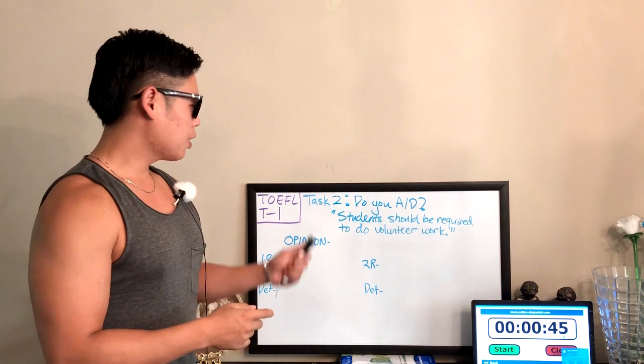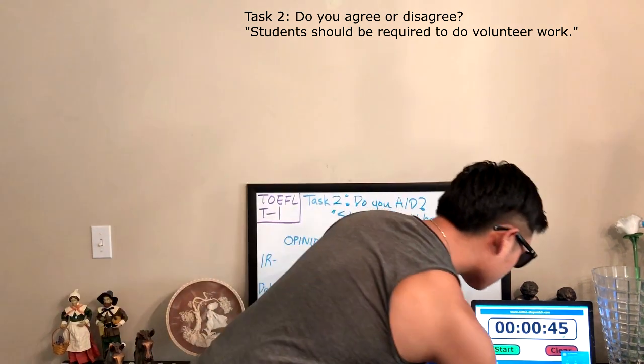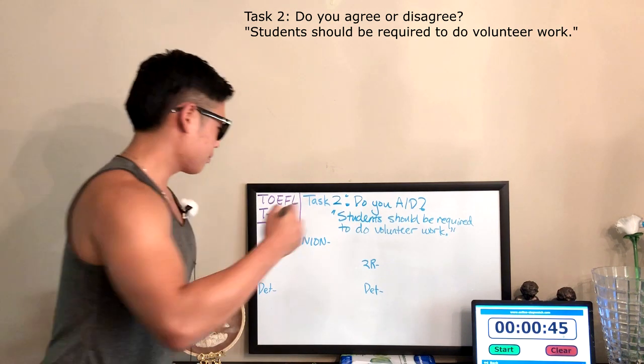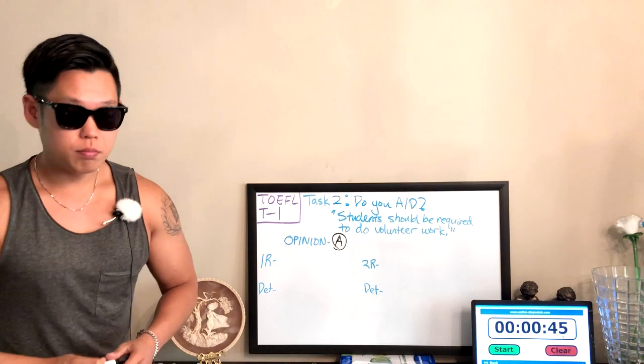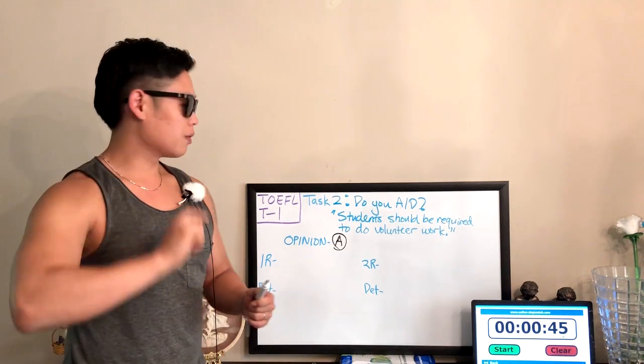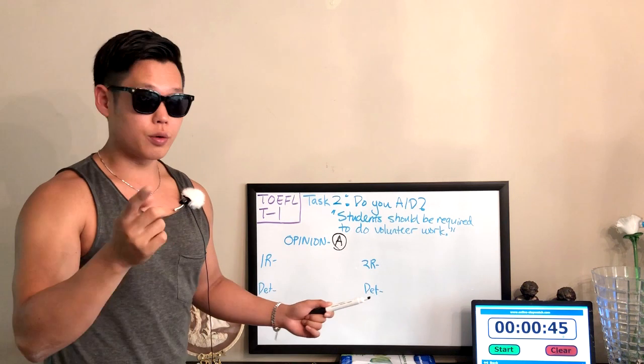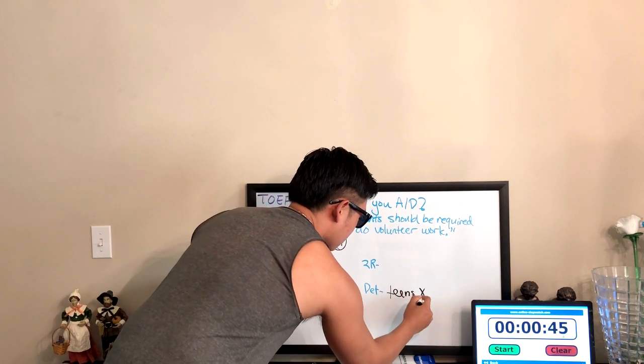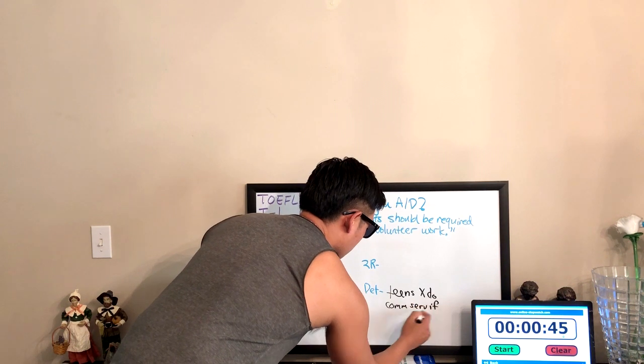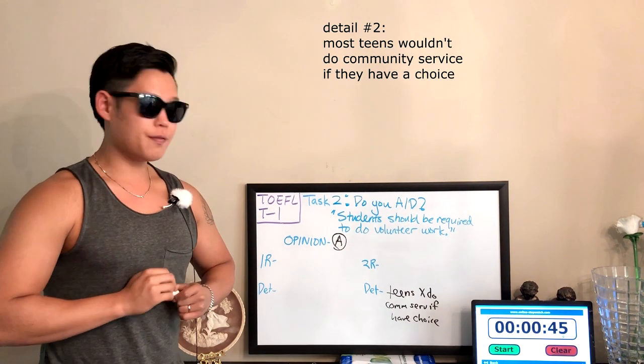Okay, so the task two question is, do you agree or disagree? Students should be required to do volunteer work. Okay, now for this question, we're going to say agree. Why? Because there are many upsides to doing volunteer work, and there are many downsides to not doing volunteer work, which I already thought of. Okay, so this is my second detail, because it came up, it popped up in my head as soon as I read the question. So here it is: Most teens would not do community service if they have a choice.